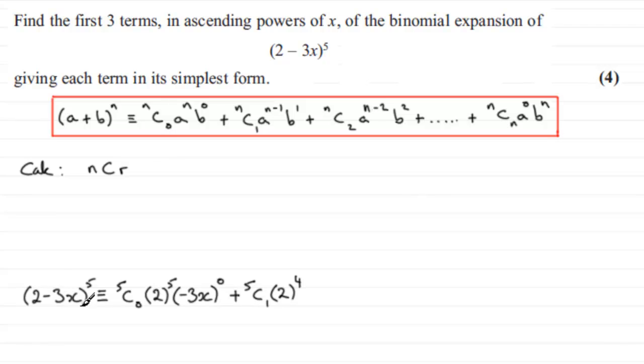And then we take the b value, minus 3x. Again, put that in brackets. And we increase the power by 1 more. So we had 0 here, so it's now up to 1.